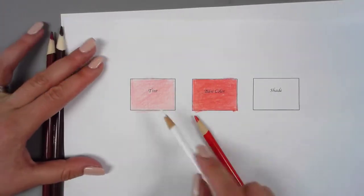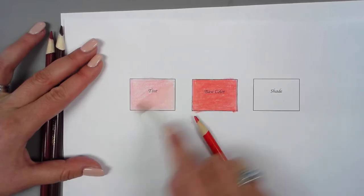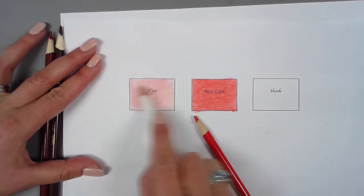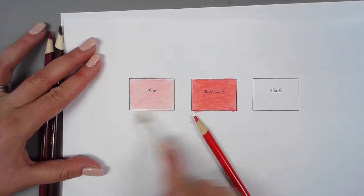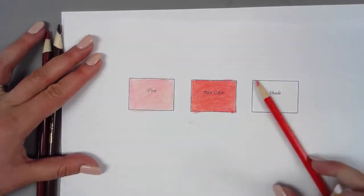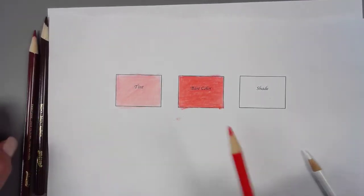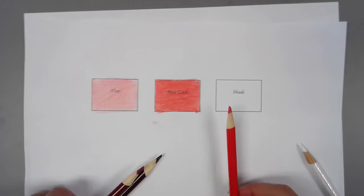Okay, and then you can also go over it with white again to kind of smooth it out, and that gives you a nice tint. I'm filling in the grain of the paper. Okay, so the tint, your base color, and now the shade. The shade you can also use a variance if you have a big color pencil set. You could use a dark red to make it a little easier.